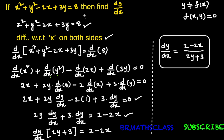In implicit differentiation, we follow particular steps in all problems. First, identify that the given function is an implicit function. Then differentiate the complete equation with respect to x. Once differentiation is done, write all dy/dx terms on one side and remaining terms on the other, take dy/dx common, and write the final answer.